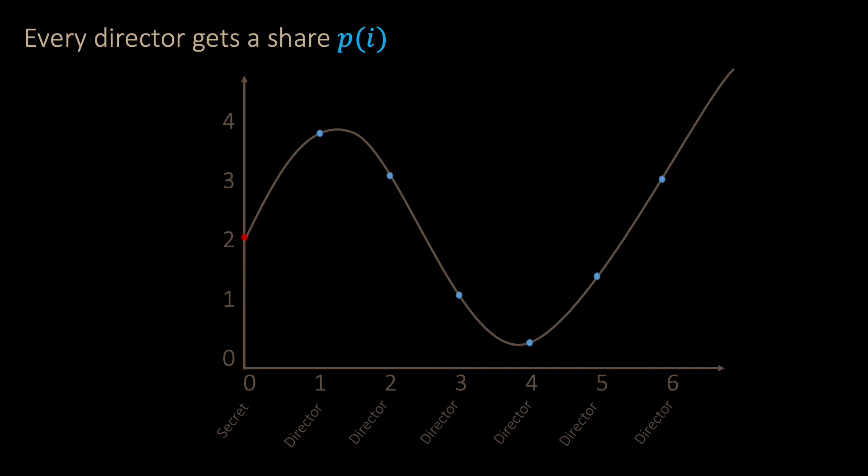Let us assume the threshold T is 4 and the polynomial is of degree 3. If any 4 of the directors come together and exchange their shares, then they can uniquely reconstruct the polynomial and get the secret by evaluating the polynomial at value 0. However, if only 3 of them meet, they cannot reconstruct the same polynomial and thus also not the secret.